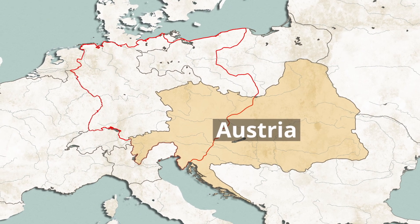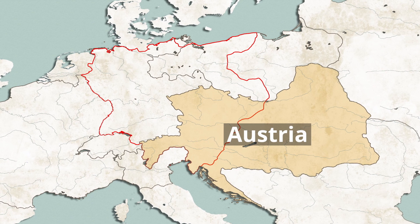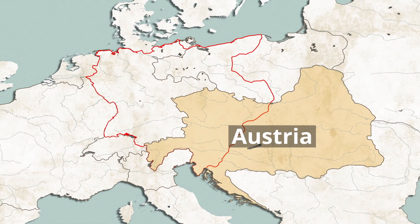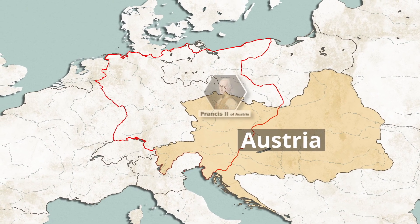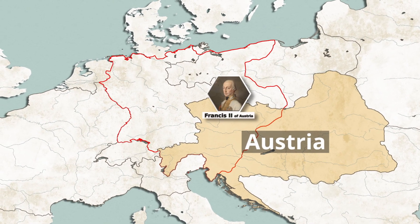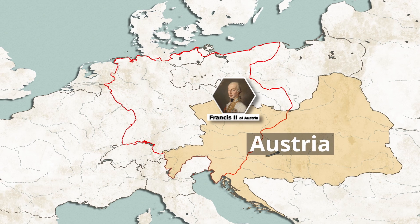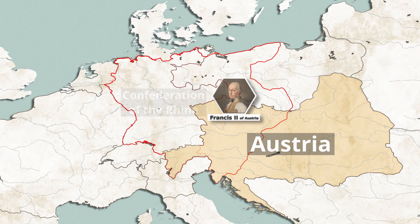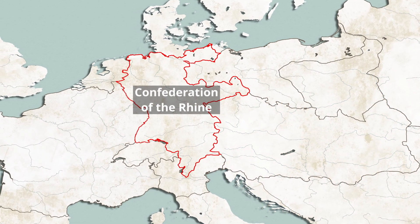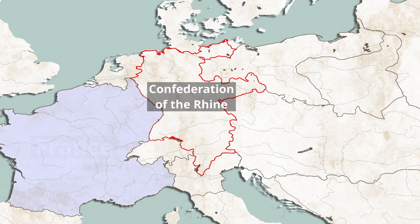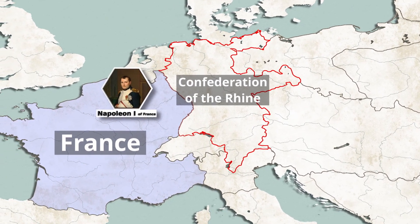However, the emperor's control over the individual states within the empire was severely limited, and on August 6, 1806, Emperor Francis II would dissolve the empire following the creation of the Confederation of the Rhine by French Emperor Napoleon Bonaparte.